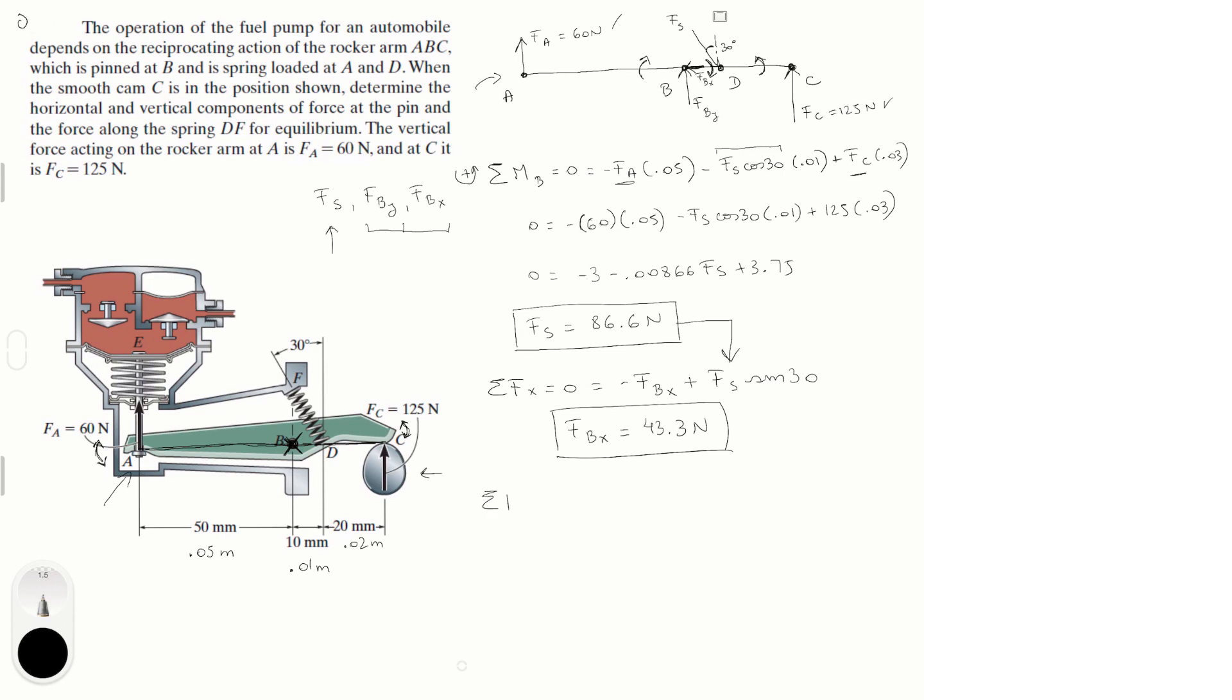And now we're going to do sum of the forces at Y which is equal to 0, and it is equal to F_A plus F_B_Y minus the vertical component of F_S which is F_S cosine of 30 plus F_C.